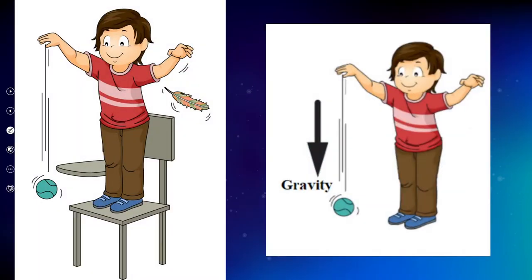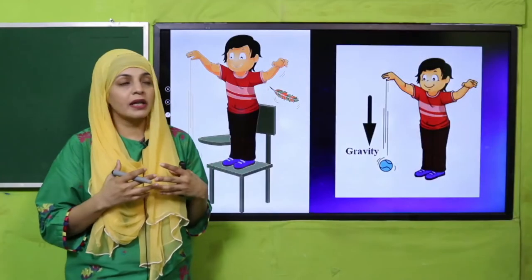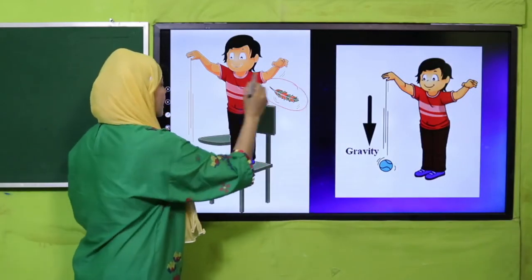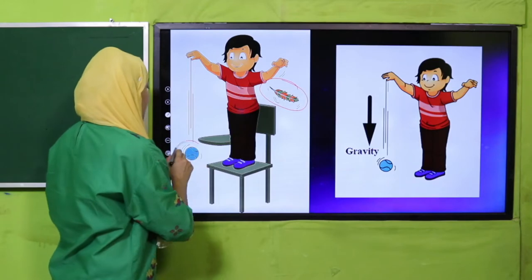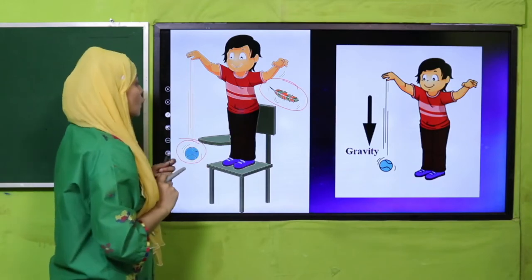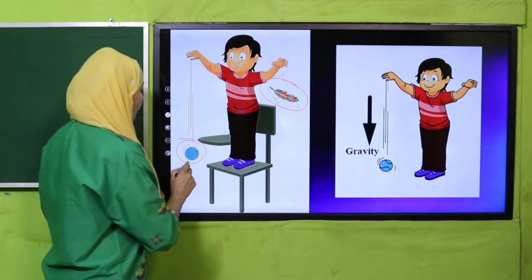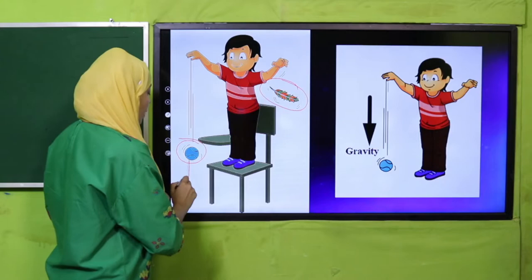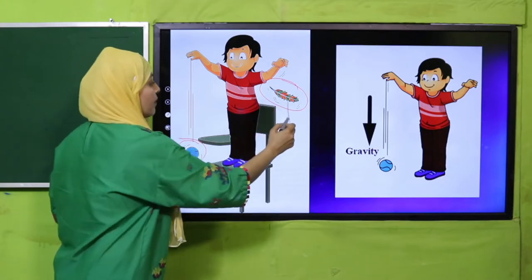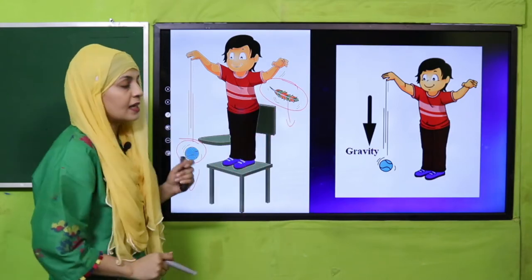Here in the practical, I will show you: this object is lighter in mass and this one has more mass. So gravity will act more on it and pull it downward faster. Aur is par gravity jo hai wo less act karegi — yeh deir se neechay aayega.